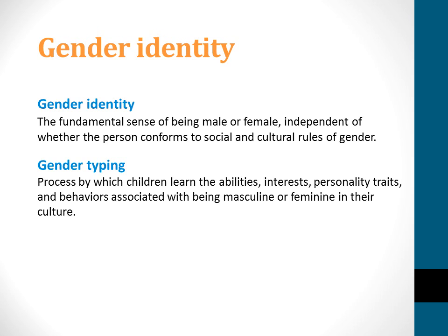Now let's talk about gender. How do children begin to understand that they are male or female? Gender identity is a fundamental sense of being male or female, independent of whether the person conforms to social and cultural rules for gender. Gender typing is the process by which children learn the abilities, interests, personality traits, and behaviors associated with being masculine or feminine — learning what is considered appropriate for males or females in a given society.